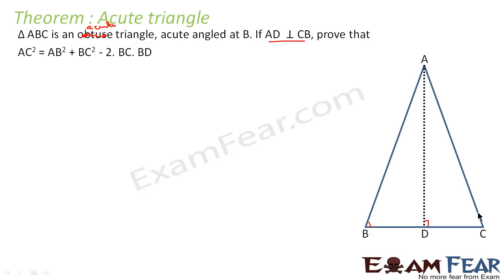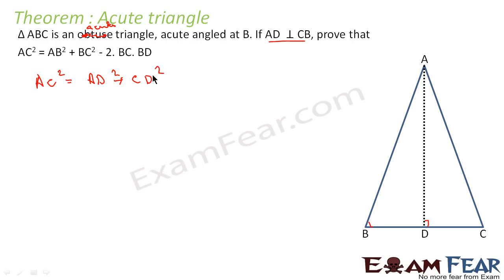To prove this, we will again use Pythagoras theorem. AC² = AD² + CD² in triangle ADC. So we can write AC² = AD² + CD², similar to what we have done earlier.